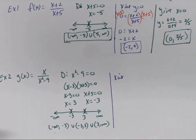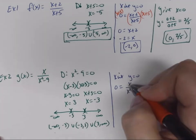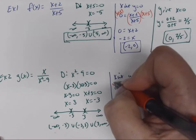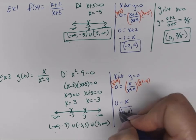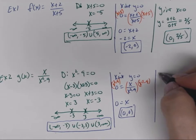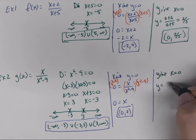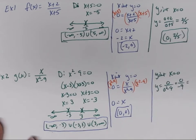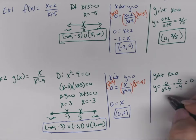For the x-intercept, set y = 0: 0 = x/(x²-9). Multiply both sides by (x²-9), and we get 0 = x. So the x-intercept is (0, 0). For the y-intercept, set x = 0: y = 0/(0-9) = 0/(-9) = 0. You can divide 0 by any number and still get 0. So the y-intercept is also (0, 0).